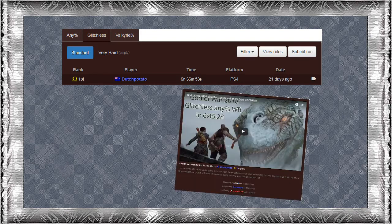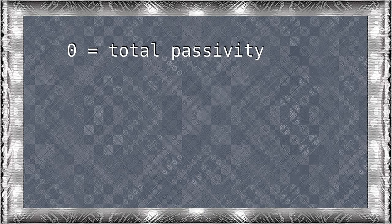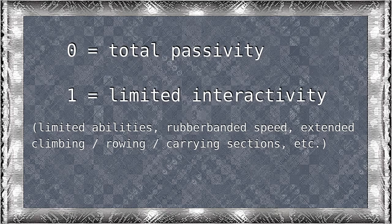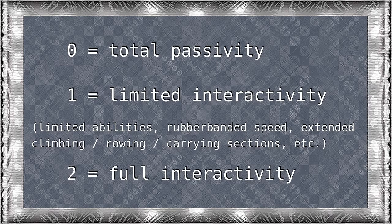To figure this out, I went through the current fastest run of God of War and assigned each section of the run a value from 0 to 2. 0 meaning total passivity — in other words, story scenes or other time where player input does nothing. 1 meaning limited interactivity, for instance extended sections of forced walking, climbing, or other situations where Kratos' speed is rubberbanded or his actions otherwise limited in some heavy-handed manner. And 2 meaning full interactivity, most normal combat and navigation sections.